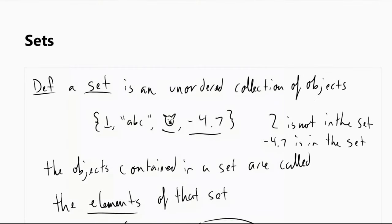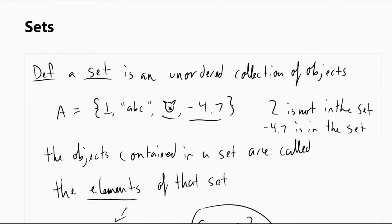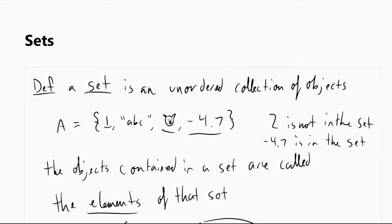Now something we can actually do is we can give sets names. So I'm going to give this set a capital A, the name capital A. So we're saying A is this set containing 1, abc, bat, and negative 4.7. Capital letters are usually what we call sets. Sometimes we use the letter S, sometimes it's A and B. It doesn't really matter, but capital letters is mostly what people use here.